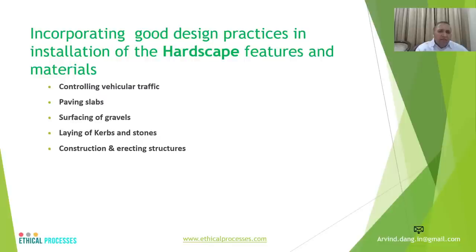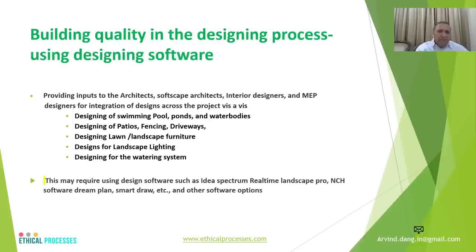How to build quality in the designing process using various kinds of design software — different kinds of inputs are required to be incorporated into the designing from software architects, interior designers, and other designers for integration of the design across the project. This includes designing of swimming pools, ponds and water bodies, pastures, fencing, driveways, lawns, landscape furniture, landscape lighting, and waterways. These inputs also need to be taken from the sales and marketing team, besides the promoters of the project.